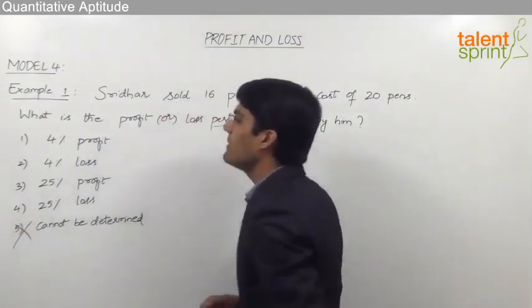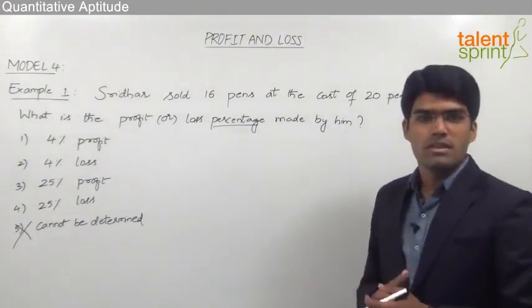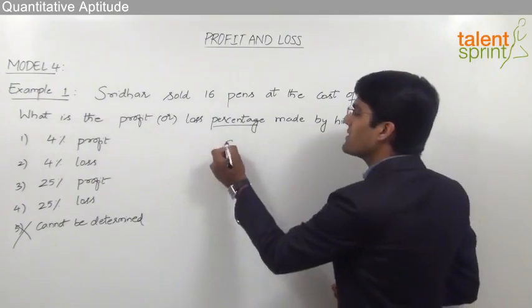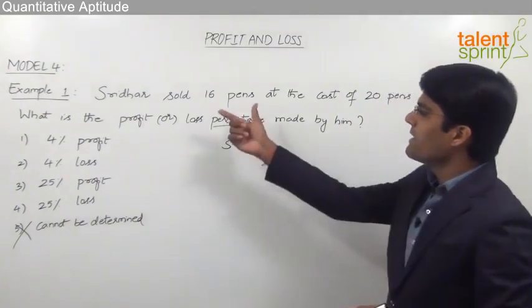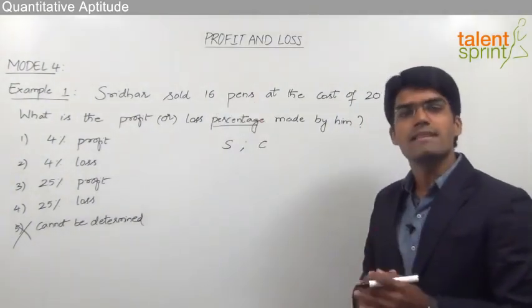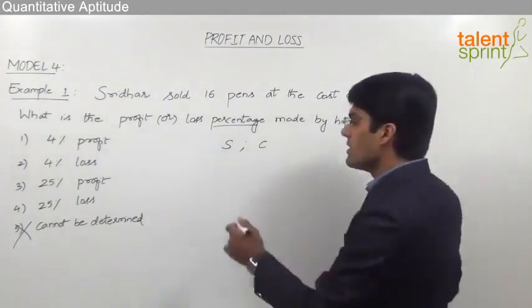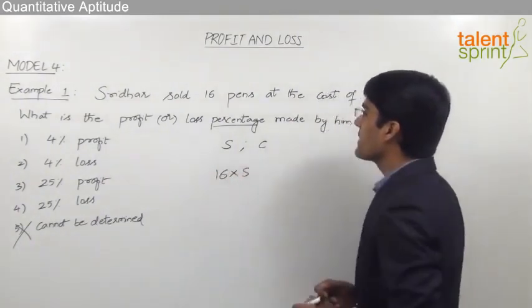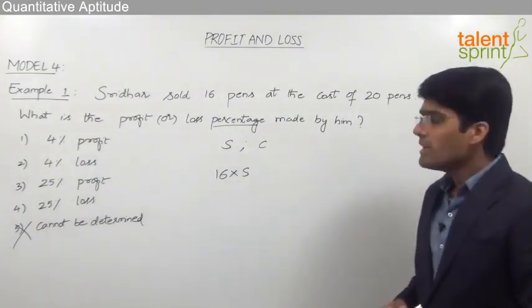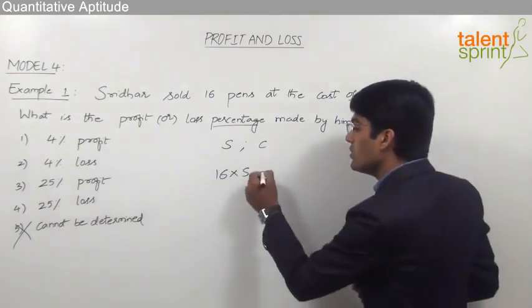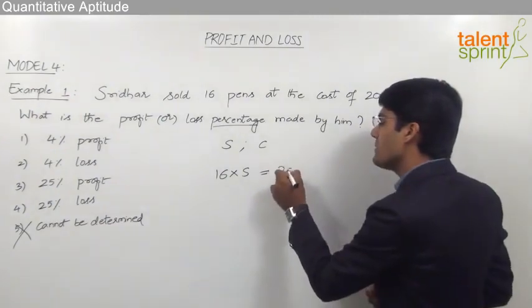This question can actually be answered even though the cost price and selling price have not been given. Let us assume that the selling price of each pen is S and the cost price of each pen is C. Sridhar sold 16 pens, so the total selling price is 16 × S. These 16 pens were sold at the cost of 20 pens, meaning the selling price of 16 pens equals the cost price of 20 pens, which is 20 × C.